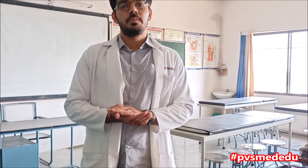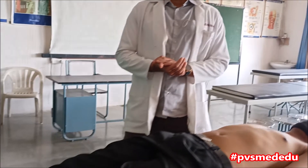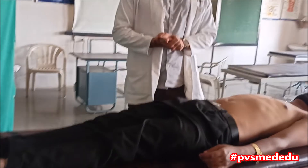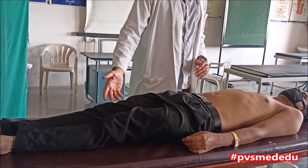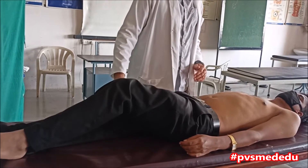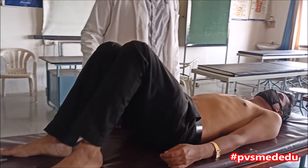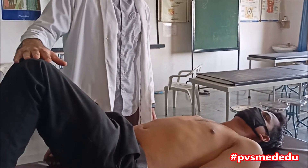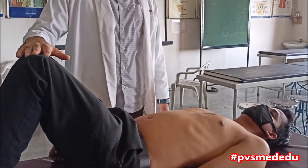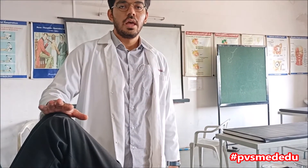For GIT examination, you should ask the subject or the patient to bend his knees so that the abdominal muscles become relaxed and are not tense. Ask the subject to take deep breaths, and to distract him you can have a conversation with him.